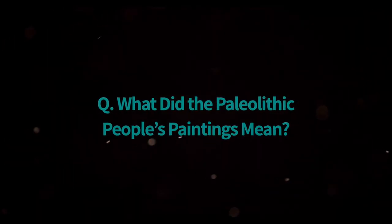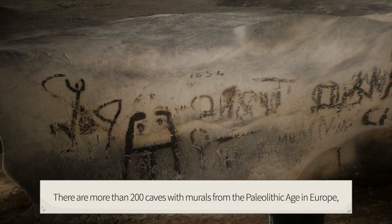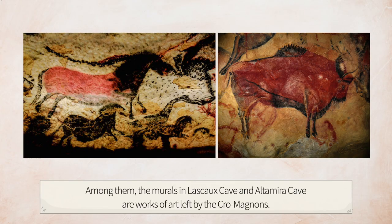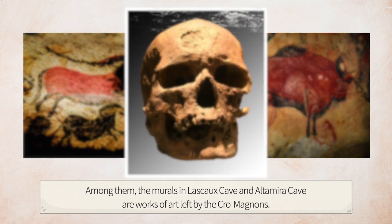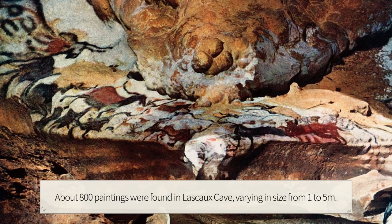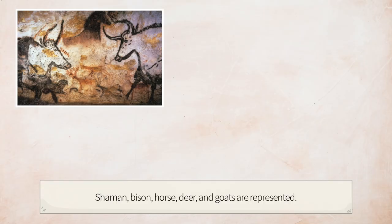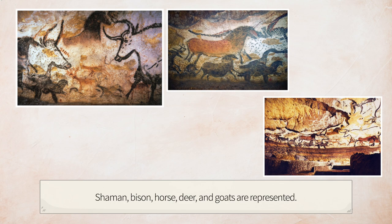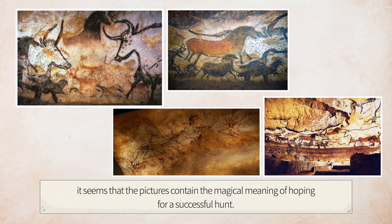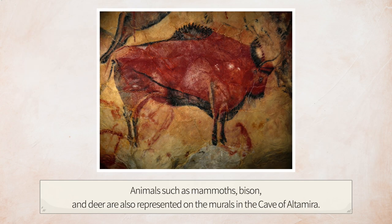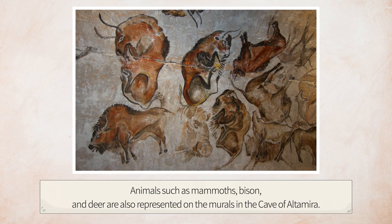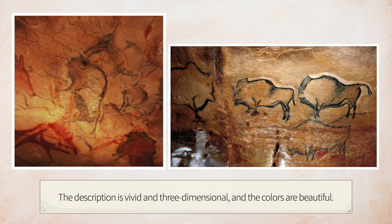There are more than 200 caves with murals from the Paleolithic Age in Europe, most distributed in France and Spain. The murals in Lascaux Cave and Altamira Cave are works of art left by the Cro-Magnons. About 800 paintings were found in Lascaux Cave, varying in size from 1 to 5 meters, depicting shamans, bison, horses, deer, and goats. Animals represented alongside arrows and traps suggest the pictures carry the magical meaning of hoping for a successful hunt. Animals such as mammoths, bison, and deer are also represented in Altamira; the descriptions are vivid and three-dimensional, and the colors are beautiful.